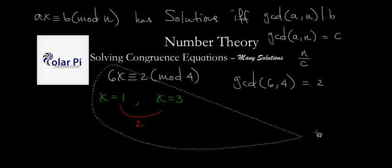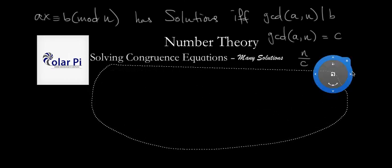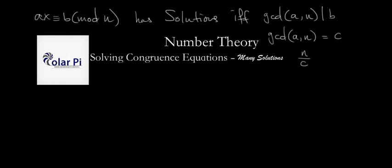Let's look at a harder example, and then we'll conclude. So this is the harder example, which is 49x is congruent to 28 mod 119.